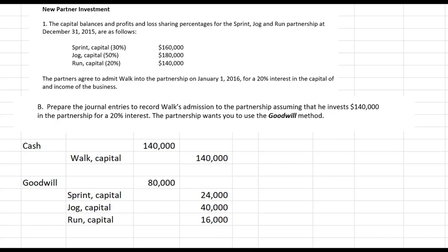When Walk comes in, he's not getting a bonus and not paying a bonus, so his account starts with whatever his contribution is — $140,000. We use that contribution to figure out what total assets should be. In this case we needed to raise assets by $80,000 by adding goodwill, then crediting that goodwill to the three original partners according to their profit and loss sharing ratios. There are several problems like this in the book — practice all of them, as they're short and you can get pretty fast and efficient at this.